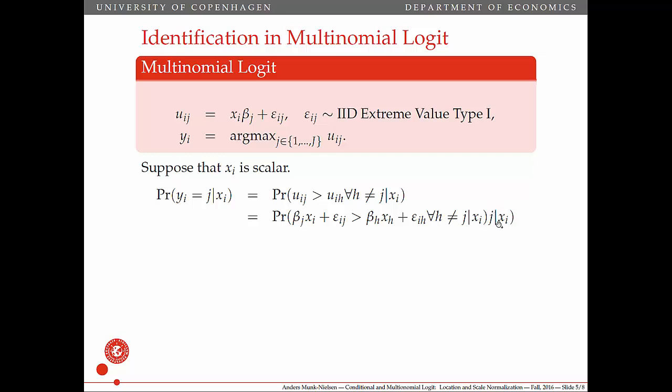Oh, there's an extra at the end. Sorry about that. So anyway, the next step here is to subtract beta_h x_h on both sides in the inequality, we can do that. And then we can collect terms here. So now we have beta_j minus beta_h times x_i. And here's the trick. Now we can add the same number to both of these, and then everything here is unchanged.